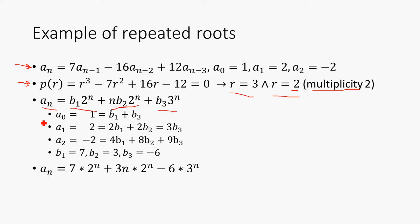Then we just get our system here. This is going to be a system with three equations, three unknowns. So we just solve it using some basic algebra skills, and we'll see that b1 equals 7, b2 equals 3, and b3 equals negative 6. So the recurrence takes this form here.